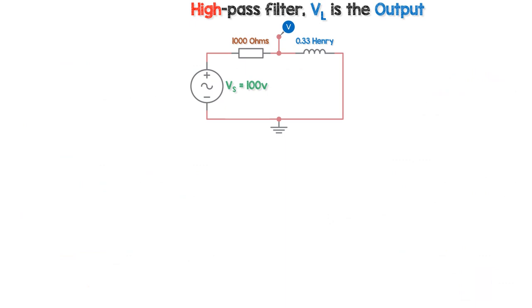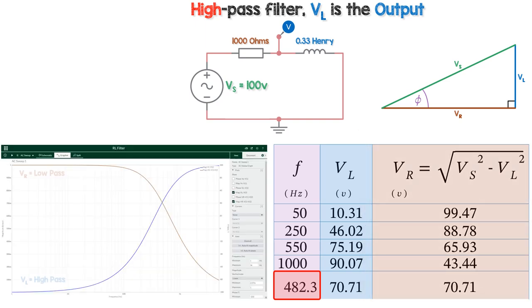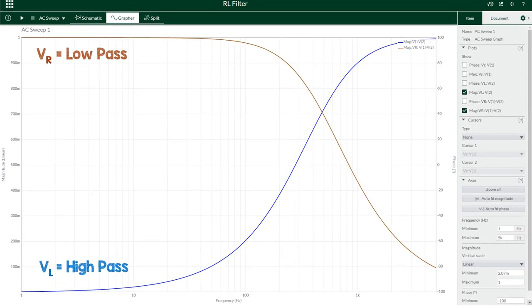So with Vl as the output, we have a high pass filter. But out of interest, let's look at the resistor voltage too, because we can work out Vr from the voltage triangle used in Pythagoras. The resistor voltage actually behaves like a low pass filter in an RL circuit, and this is the same circuit. So the resistor voltage drop is a low pass filter, and the inductor voltage drop is a high pass.